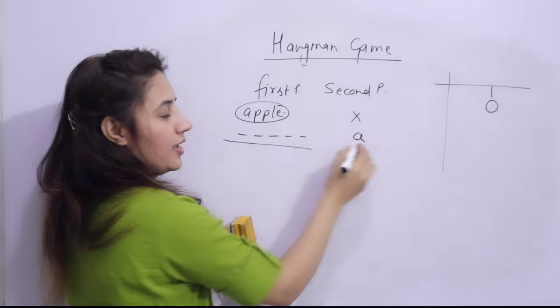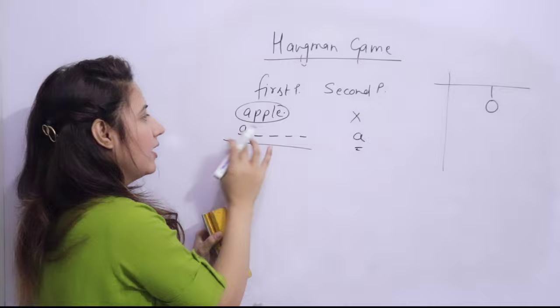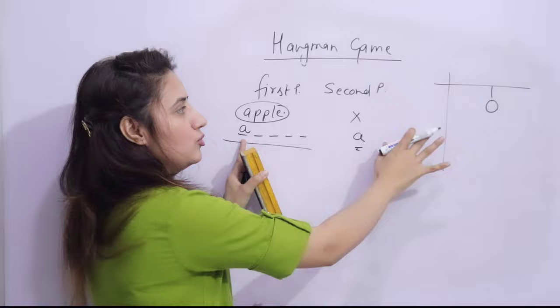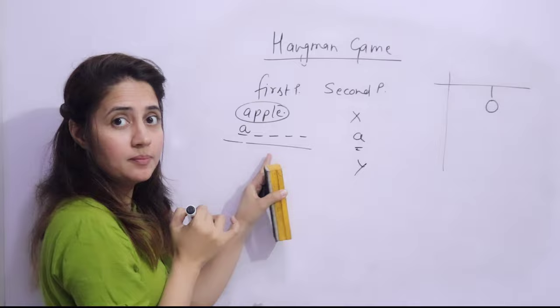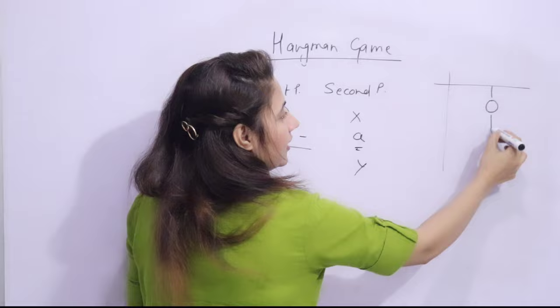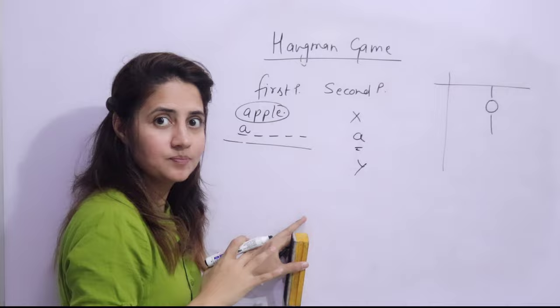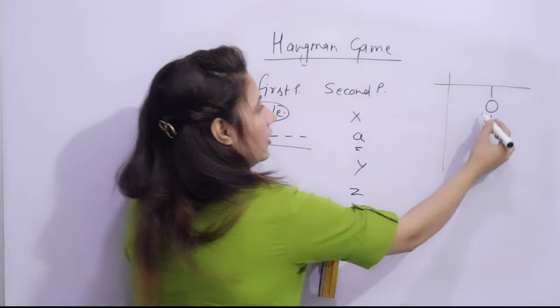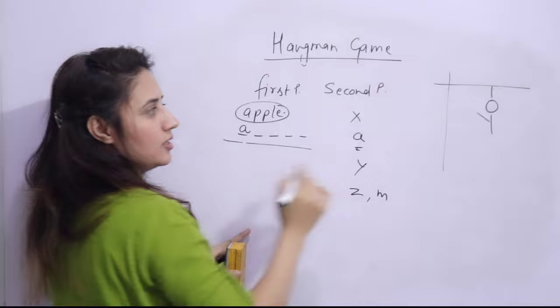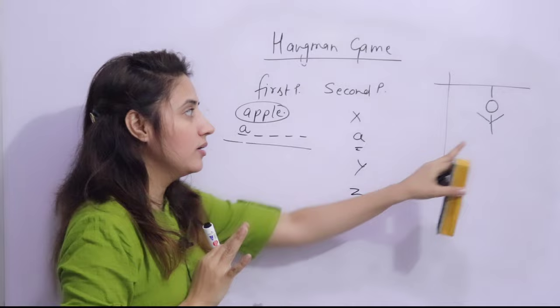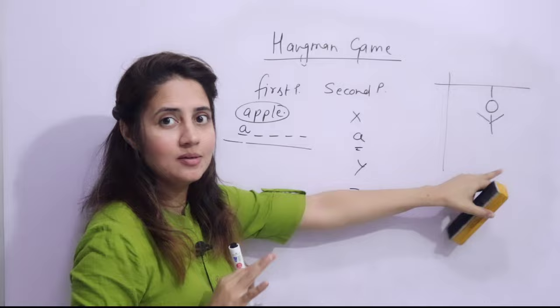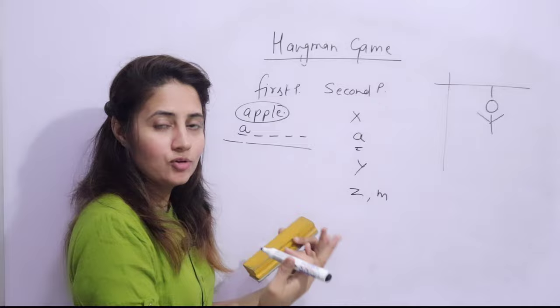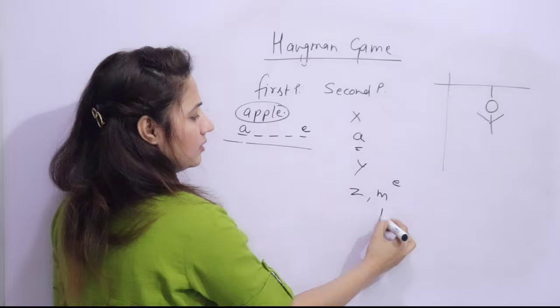Suppose the second guess is 'a' - 'a' is correct and is in the word, so I'll place the letter 'a' at the correct position and you do not lose a life. Suppose the third guess is 'y' - 'y' is not present, so you lose a life and we draw the body of the hangman. Next guess is 'z' - also not correct, so we draw one hand. Next guess is 'm' - also not present, so the first player draws the second hand.